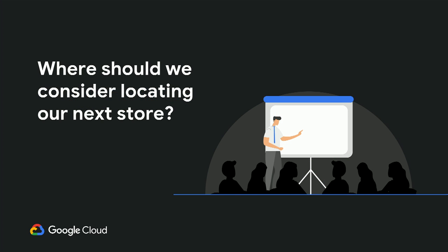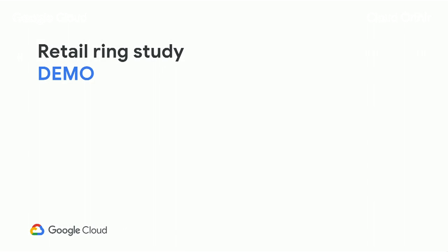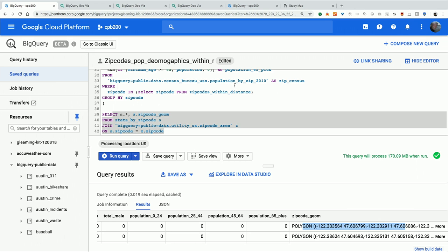We'll dive into a couple demos here. Referencing the example Soleil talked about earlier, we're going to pretend that we are retail site selectors. We have a store, and the target demographic is 25 to 44. Let's cut over to the demo.